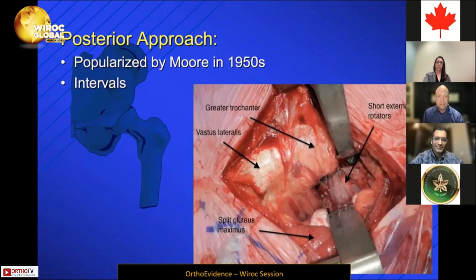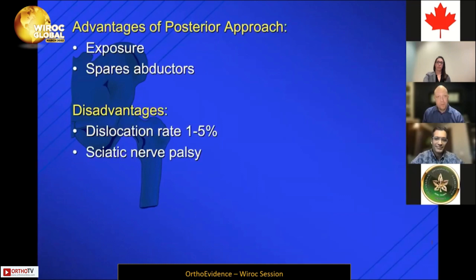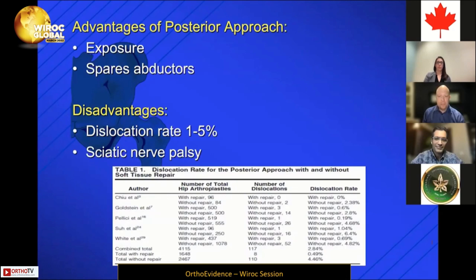Your at-risk structure is the sciatic nerve, given its relatively close proximity on this approach. The advantages of this exposure are that it gives very extensile exposure for both the acetabulum and femur, and it does spare the abductors. Historically, the knocks against it would be the dislocation rate — anywhere from one to five percent — and the possibility of a sciatic nerve palsy or injury associated with the surgery.